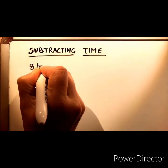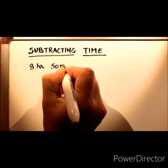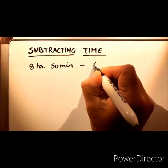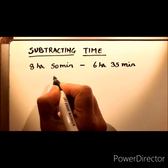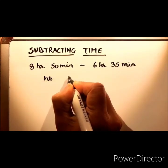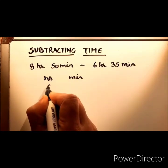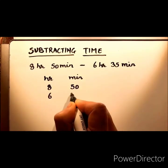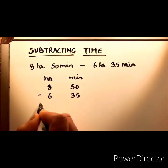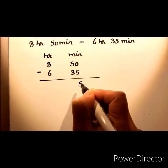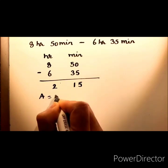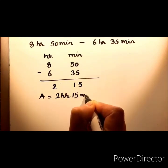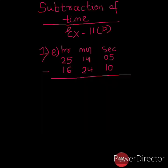Question: 8 hours 50 minutes minus 6 hours 35 minutes. We write hours and minutes, then 8 hours 50 minutes and 6 hours 35 minutes, and we subtract. This gives us 2 hours 15 minutes. So our answer will be 2 hours 15 minutes.